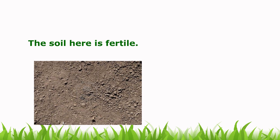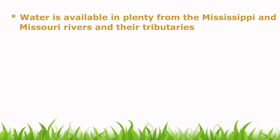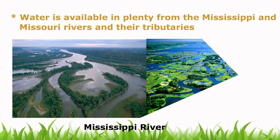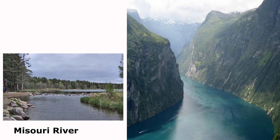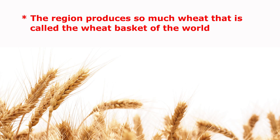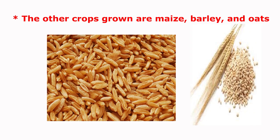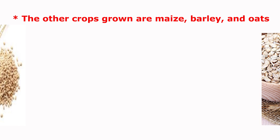The soil is fertile and water is available in plenty from the Mississippi and Missouri rivers and their tributaries, making the region perfect for agriculture. The region produces so much wheat that it is called the wheat basket of the world. Other crops grown include maize, barley, and oats.